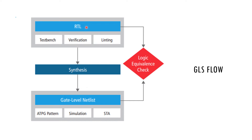Basically, you have an RTL representation and you verify this RTL representation with your functional verification. After the functional verification is performed, you basically go through the synthesis flow and you have the gate level netlist. There are issues which can crop up during the synthesis or during the logic equivalence check and STA, which can only be checked in a gate level simulation rather than an RTL simulation. So it's a necessary aspect of the flow.